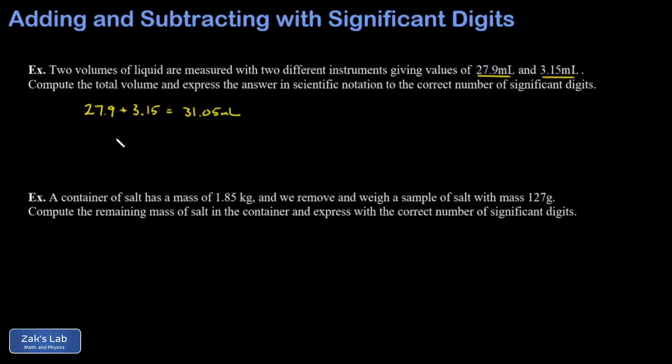Now we're going to round off to the correct number of significant digits. And the reasoning behind the rule here is that 27.9 has uncertainty in the tenths place. The 3.15 has uncertainty in the hundredths place. And so that uncertainty in the tenths place makes it so the hundredths place becomes irrelevant.